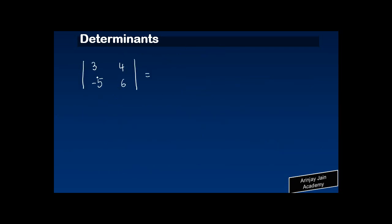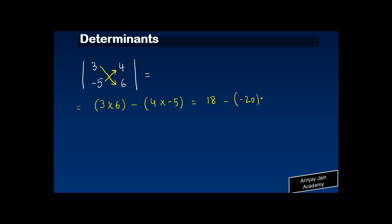Let's say I give you the determinant with elements three, four, minus five, six. We write it under straight lines. The value will be calculated by multiplying three by six and subtracting minus five by four. In other words, the value is three times six minus four times minus five, which equals 18 minus (minus 20), giving us 38.